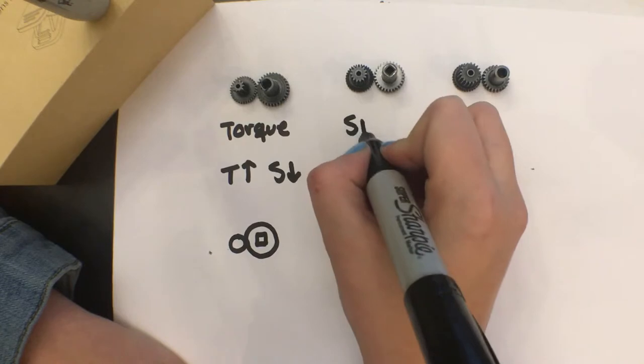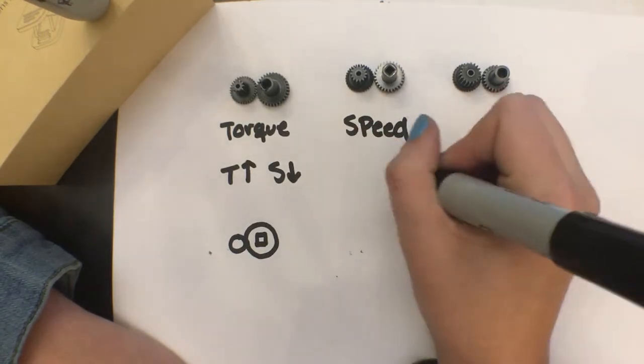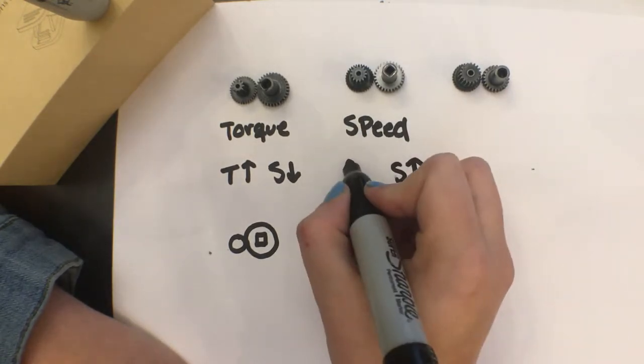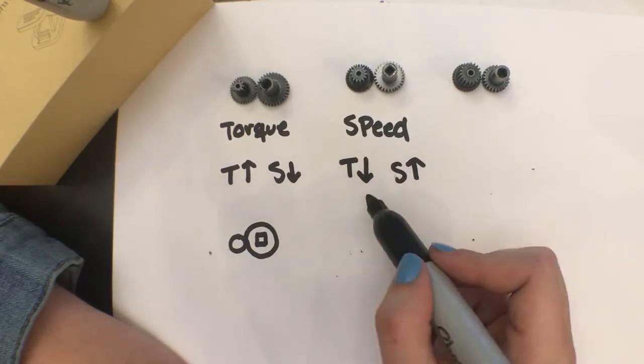The next one is speed. Speed gears obviously have more speed and less torque because speed and torque are inversely proportional. So if your speed goes up then your torque goes down.